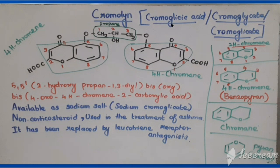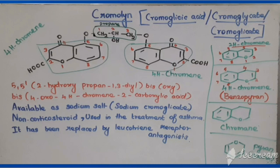Cromolyn is otherwise called chromoglycic acid or chromoglycate. Looking at the structure of cromolyn: it is having a 4H-chromene nucleus — two 4H-chromene units. The second position has a carboxylic acid, the fourth position has a ketone (oxo group), and the fifth position is connected to oxygen. The two oxygens are connected with propane, which has a hydroxy group at the second carbon.